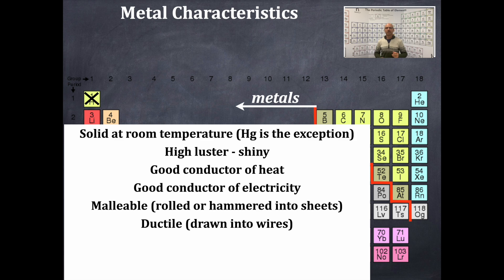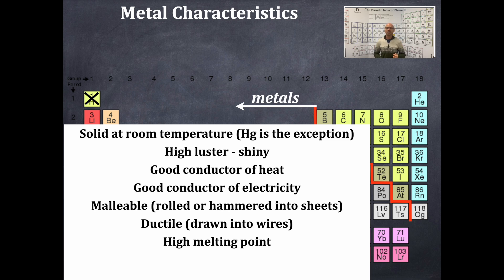Metals are also ductile — they can be drawn into wires, like copper wire in your walls, or a metal ring drawn into wire and bent around itself, or a necklace made of wire. Metals have high melting points, which is why most are solid at room temperature and pressure except mercury. And metals have high densities.